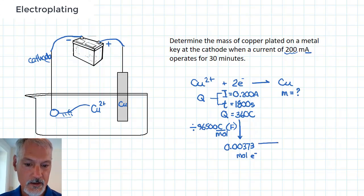Now I'm going to employ the coefficients in the equation, the two to one ratio that exists between these two. Hence the number of moles of copper would be 0.00187. And that would now be moles of copper.